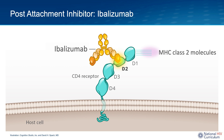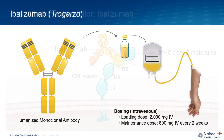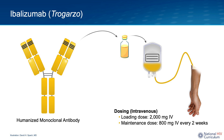It's important to note that Ibalizumab binds to the D2 region of the host cell CD4 receptor and does not interfere with the normal functioning of the D1 region, which is involved with receptor binding to major histocompatibility complex (MHC) class II molecules. Thus, Ibalizumab blocks HIV entry while preserving normal immune function. Ibalizumab is the only available HIV post-attachment inhibitor and must be given intravenously with an initial loading dose of 2000 mg followed by 800 mg maintenance doses every two weeks.